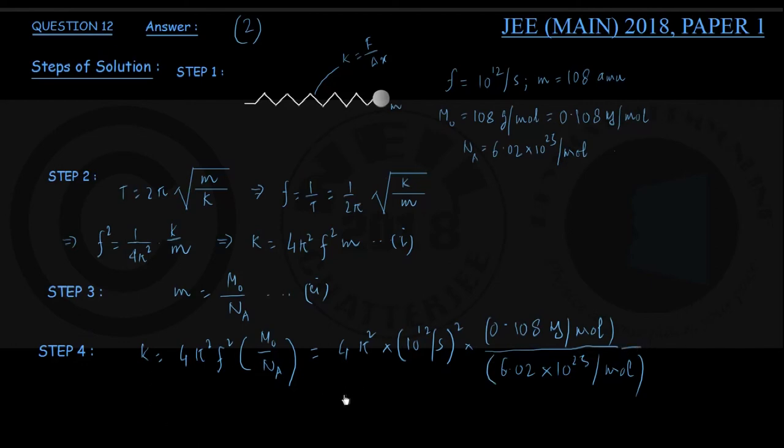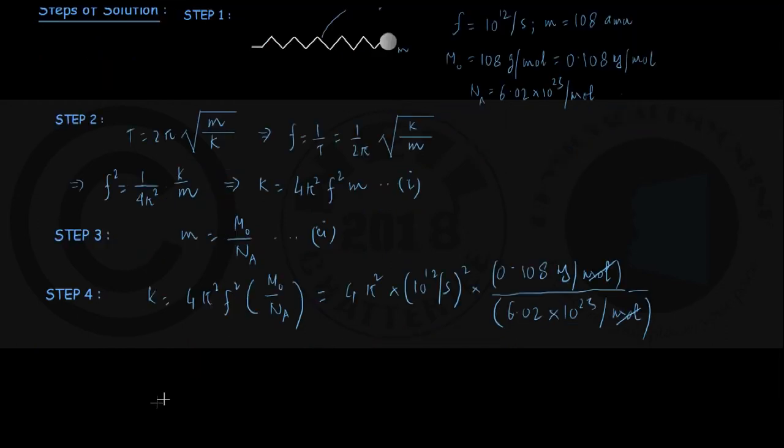Let us calculate this without help of any calculator, we can do it even orally approximately. Per mole per mole cancelling out, this is coming out to be 4 pi square into 10 to the power 24 into 0.108 divided by 6.02 into 10 to the power 23. Look at the unit, it is coming out to be kg per second square. Moles cancelling out is kg per second square. We can write it as kg per second square.